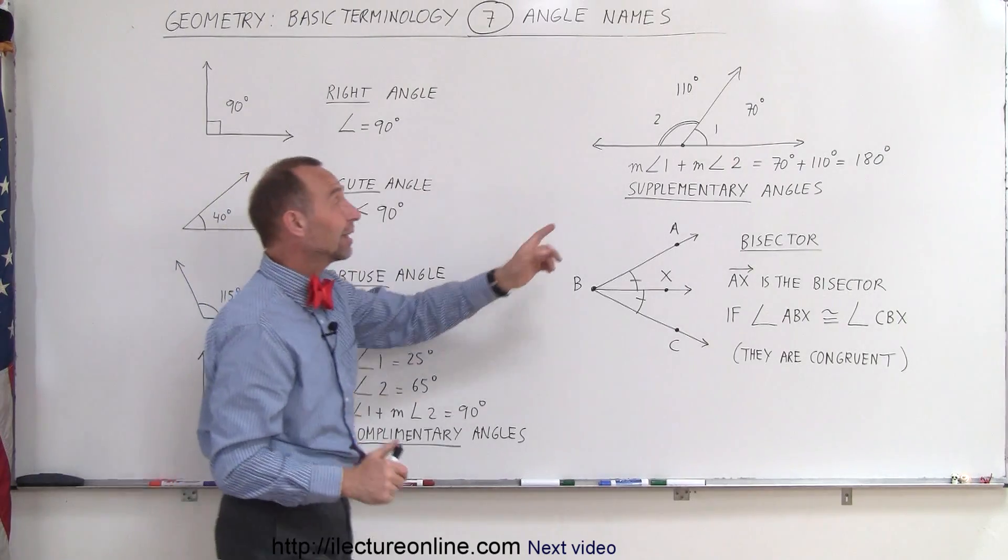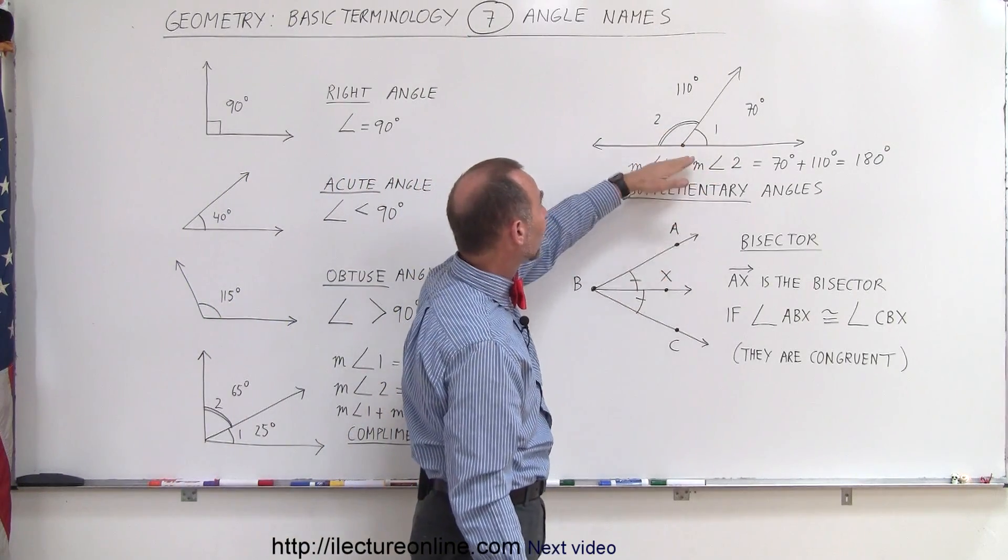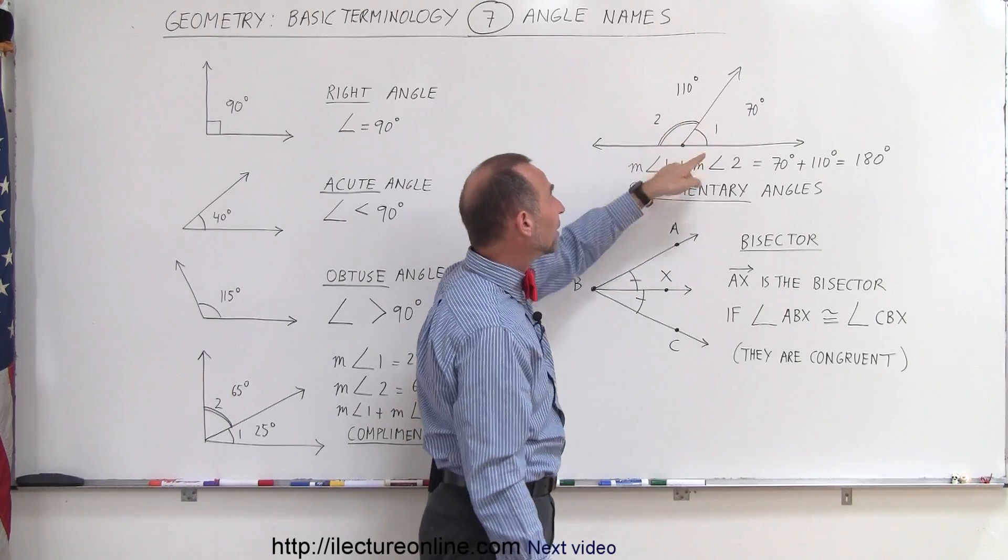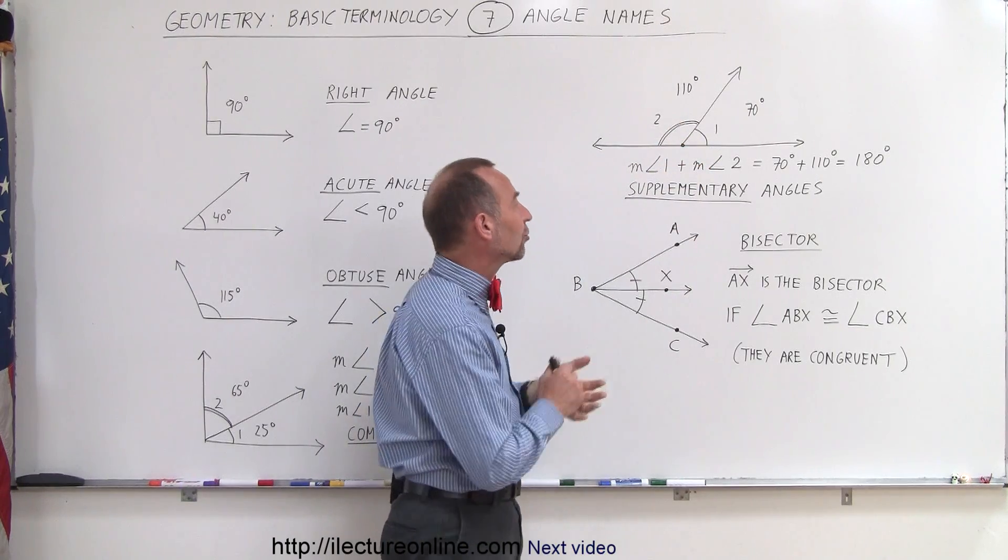If we have two angles like this, where they add up to 180 degrees, then they're called supplementary angles.